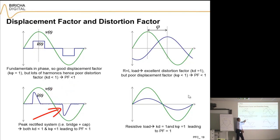But the shape is very distorted and you've got a big distortion factor. So you have got both a displacement factor smaller than one and a distortion factor smaller than one, and therefore you end up with a poor power factor.